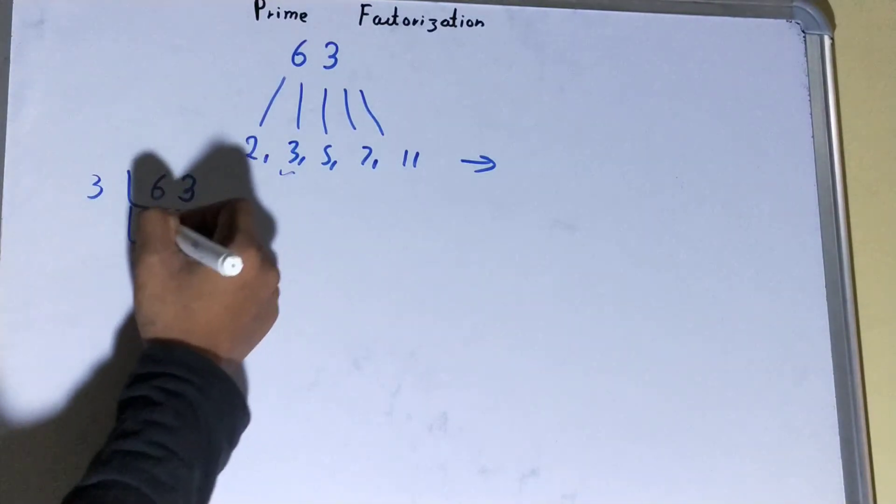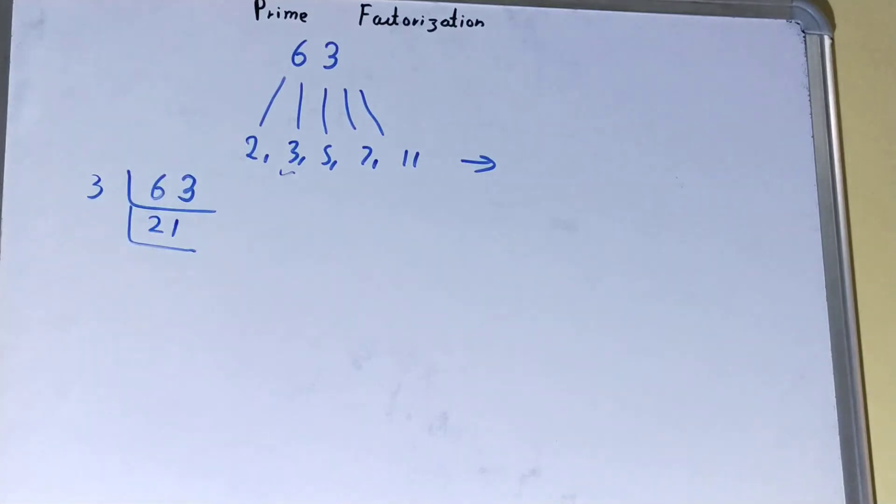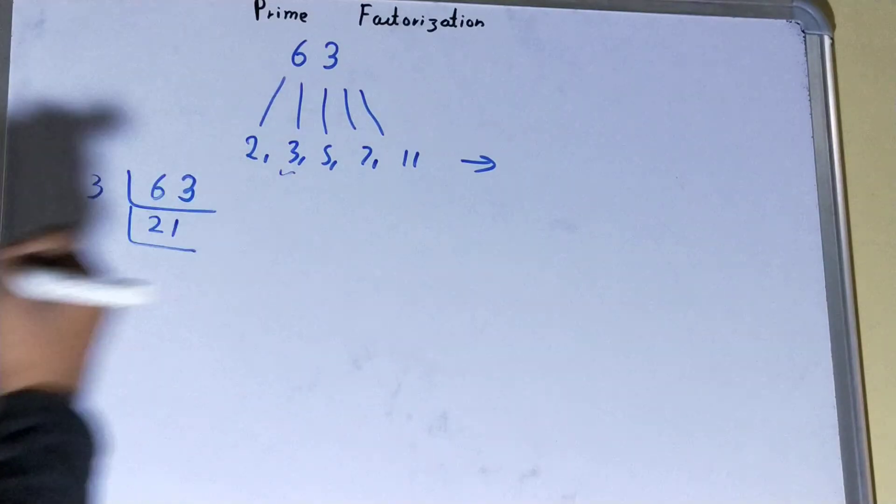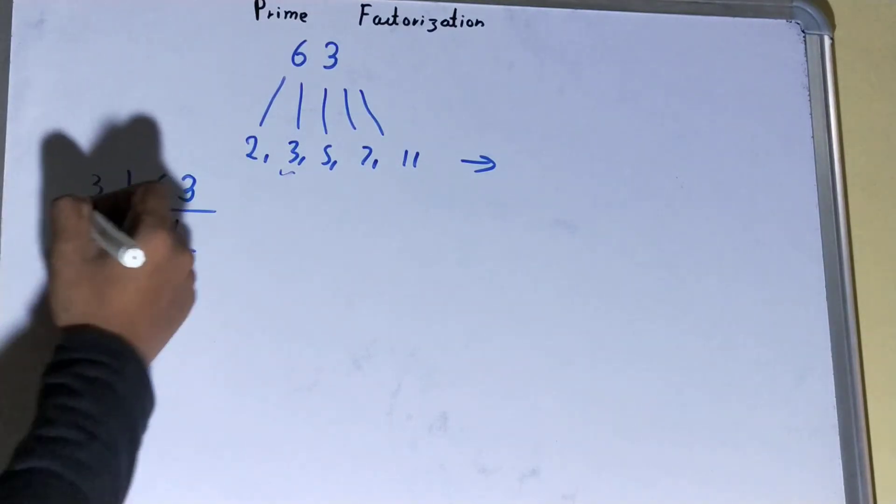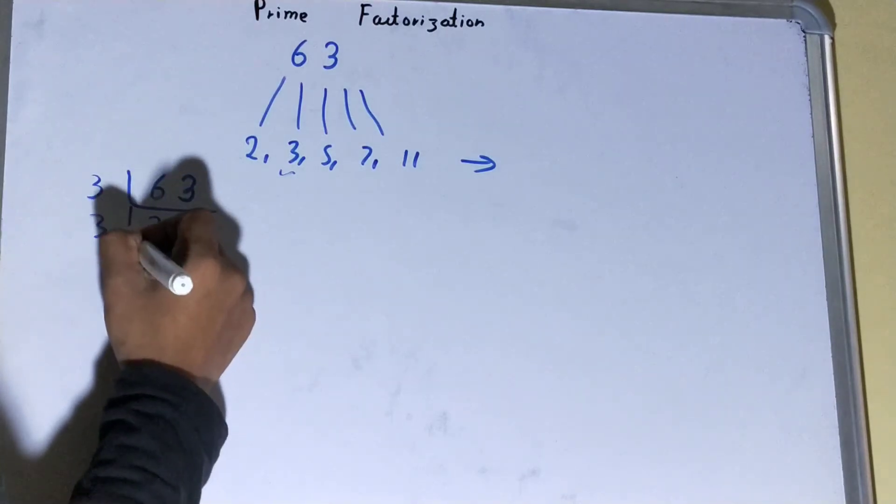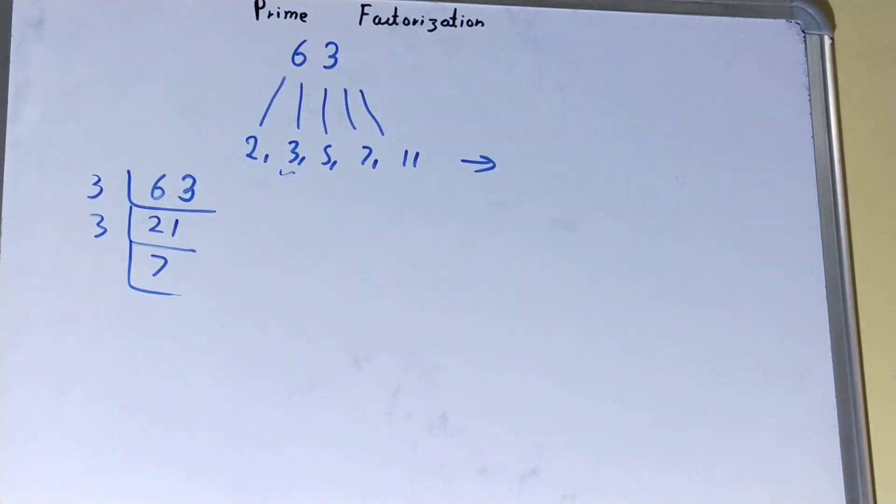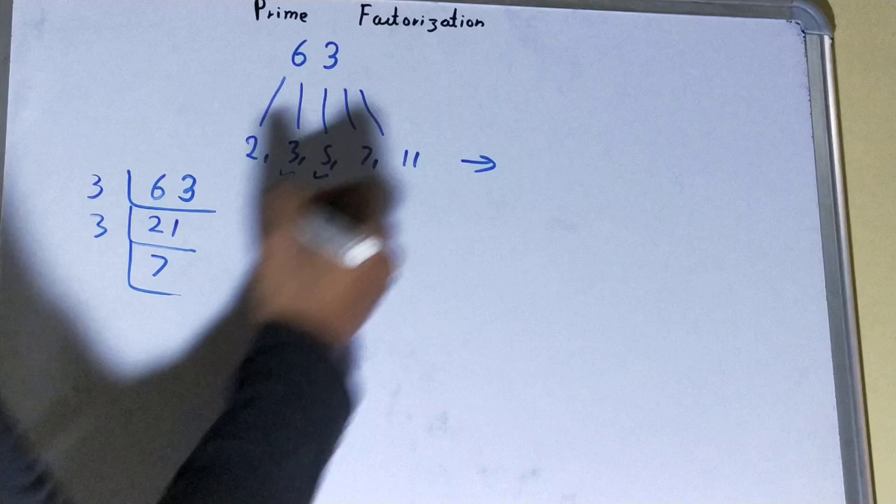Okay, how many times? 21 times. Again same thing - is 21 divisible by 3? Yes, so we'll divide it and we'll be left with 7. Is 7 divisible by 3? No, so we'll go to the next number, that is 5.